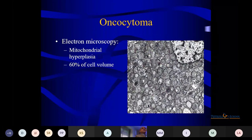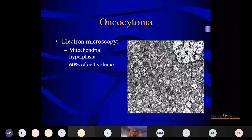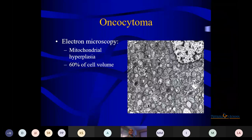During PG training, I used to look at slides without reading the history first — I would form a picture and then see the history, so the mind is not biased. Try to do this exercise. On electron microscopy, mitochondria are seen and constitute 60% of cytoplasm. This is a routine finding worth noting.